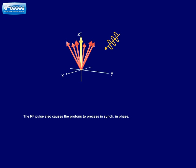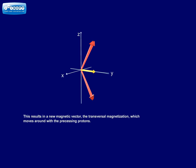The RF pulse also causes the protons to precess in sync, in phase. This results in a new magnetic vector, the transversal magnetization, which moves around with the precessing protons.